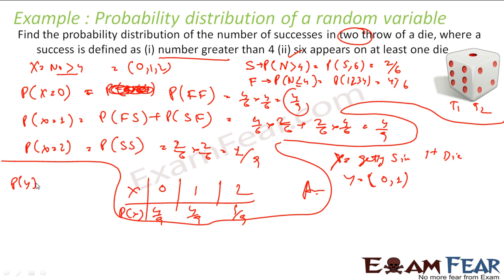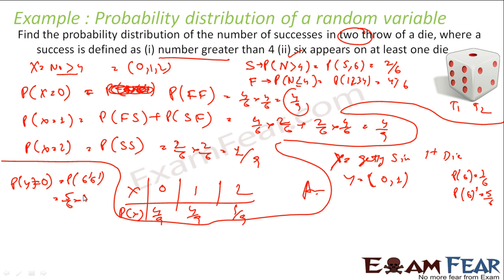Probability of y equal to 0 — no 6 at all — means getting 6-complement in both throws. Since the events are independent: (5/6) times (5/6) equals 25 by 36.